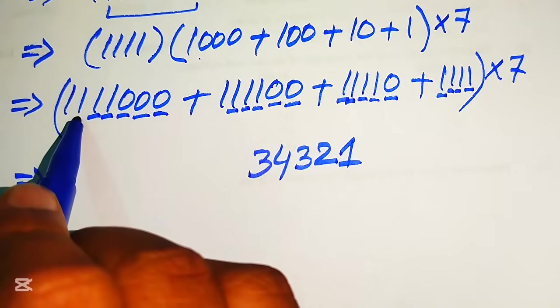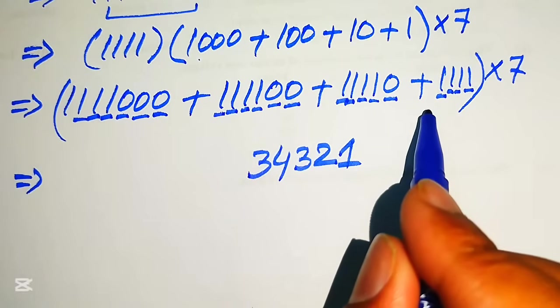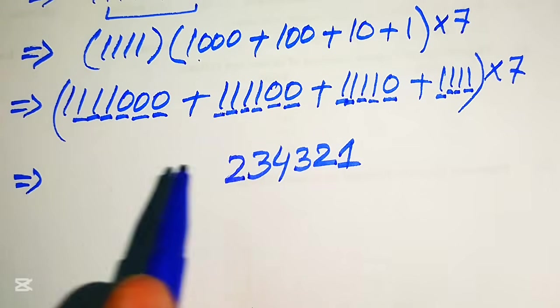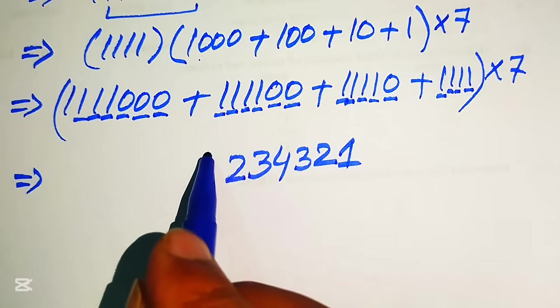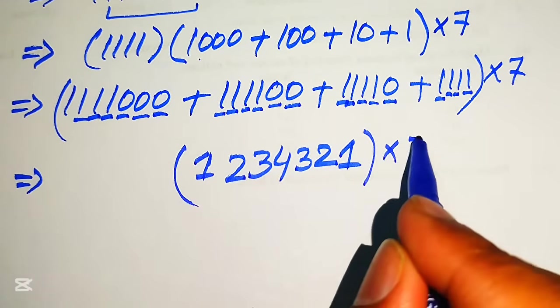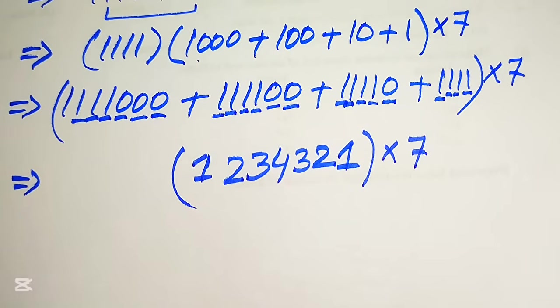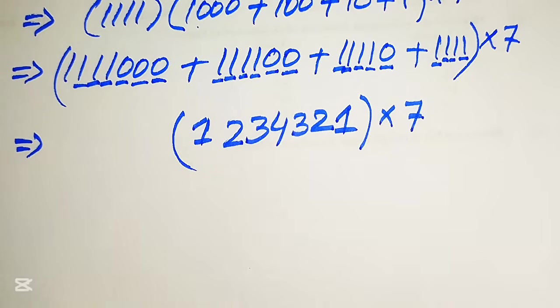We write 3 here and after that we have this is 1 plus 1 is 2 and we have no more term. We write 2 here and at the last we have this is 1 term it is 1 only and it is multiplied by 7. And now here in the next step we need to multiply this 7 with this complete number.